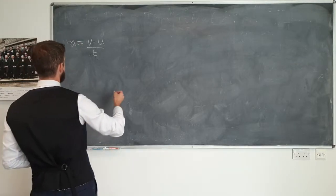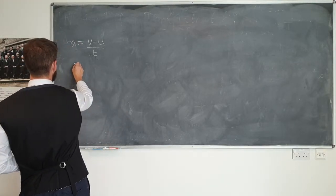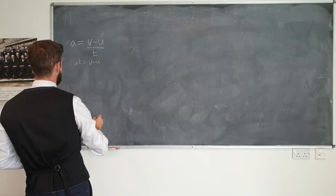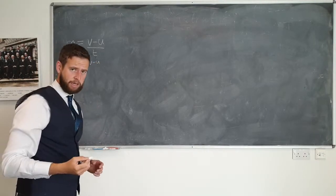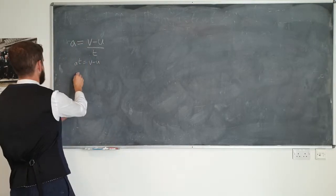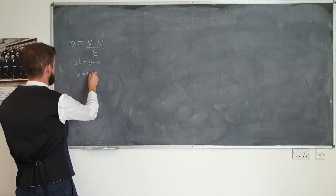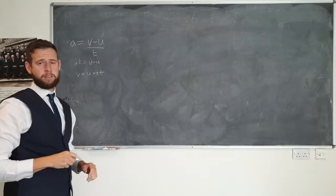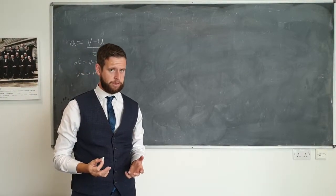It is more commonly seen through the rearrangement that occurs when you multiply both sides by T, then you have V minus U, and then you add U onto both sides, and you have V equals U plus AT. This is the first equation of motion, the first one we're going to use.